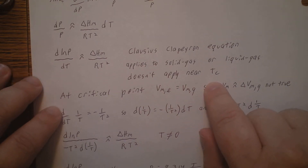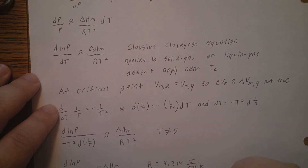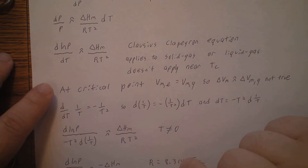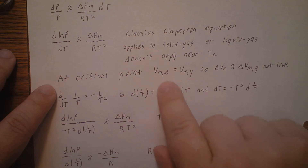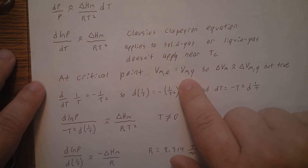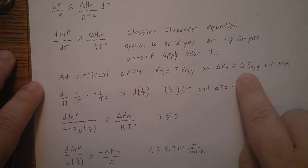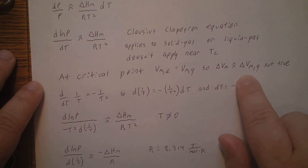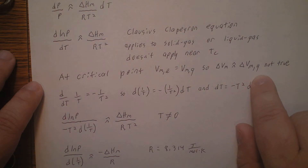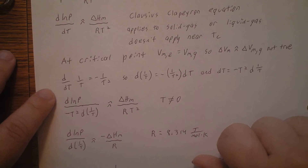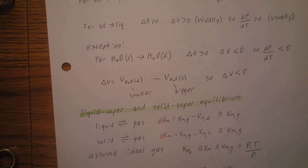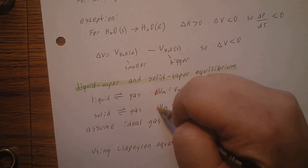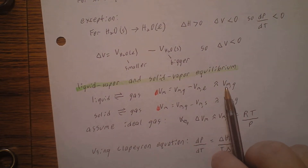This equation does not apply near the critical point, because near the critical point the density of the liquid and the gas become similar. At the critical point, the molar volume of the liquid is roughly equal to the molar volume of the gas, so the assumption that ΔVm ≈ Vm(gas) breaks down.